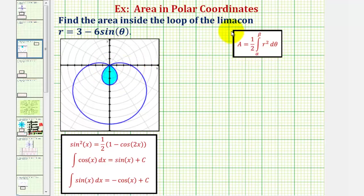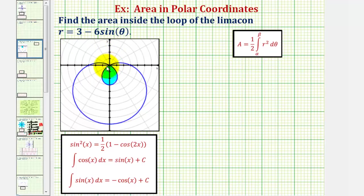We'll find this interval two ways: first using the graphing calculator, and then by setting r equal to zero. Notice when r is zero, we're at the pole. So if we can find the angles where we're at the pole, we can determine on which interval this loop is traced.